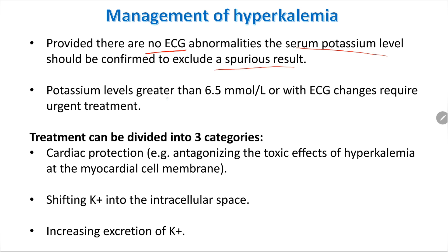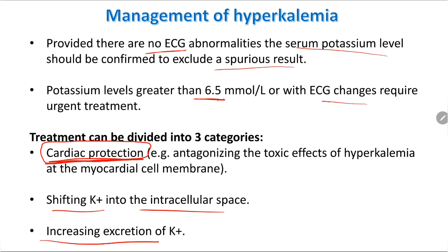Potassium levels greater than 6.5 with ECG changes require urgent treatment. Treatment is divided into three categories: first, cardiac protection — antagonizing the toxic effects of hyperkalemia to protect the heart; second, shifting potassium into the intracellular space; and third, increasing excretion of potassium.